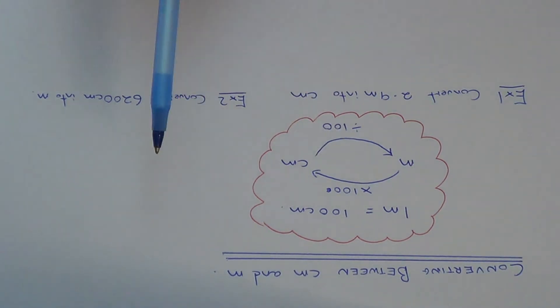The first thing you need to know is that in one meter, we have 100 centimeters. If you need to convert meters into centimeters, you multiply the number by 100. If you're converting from centimeters into meters, you divide the number by 100.